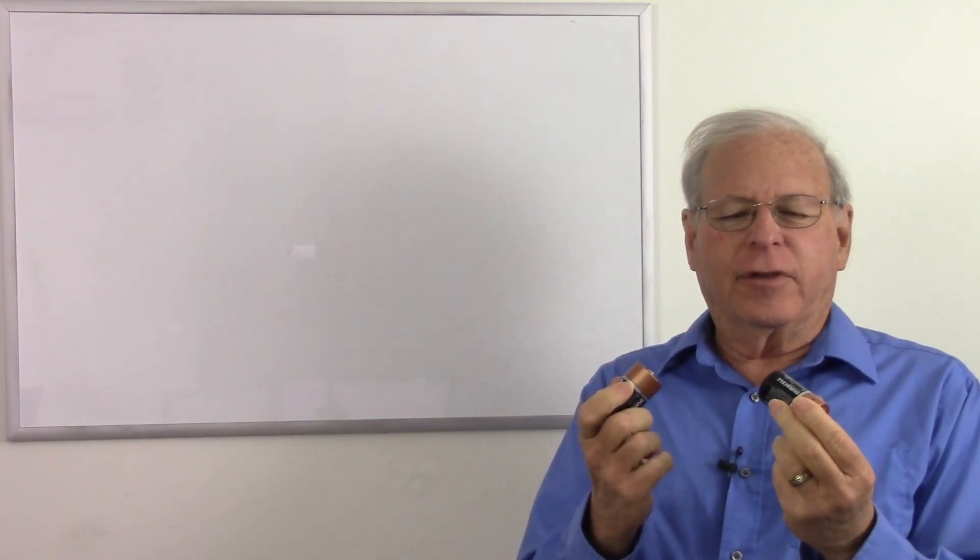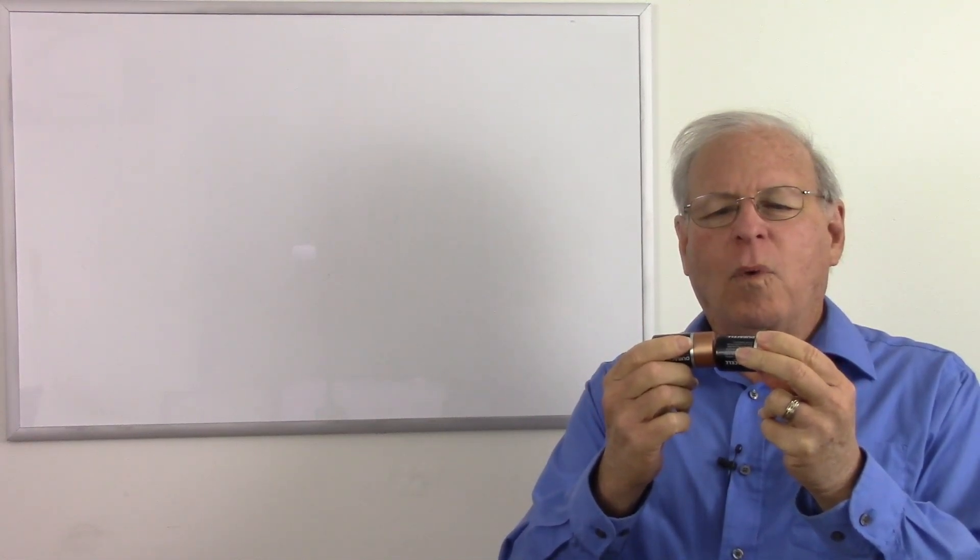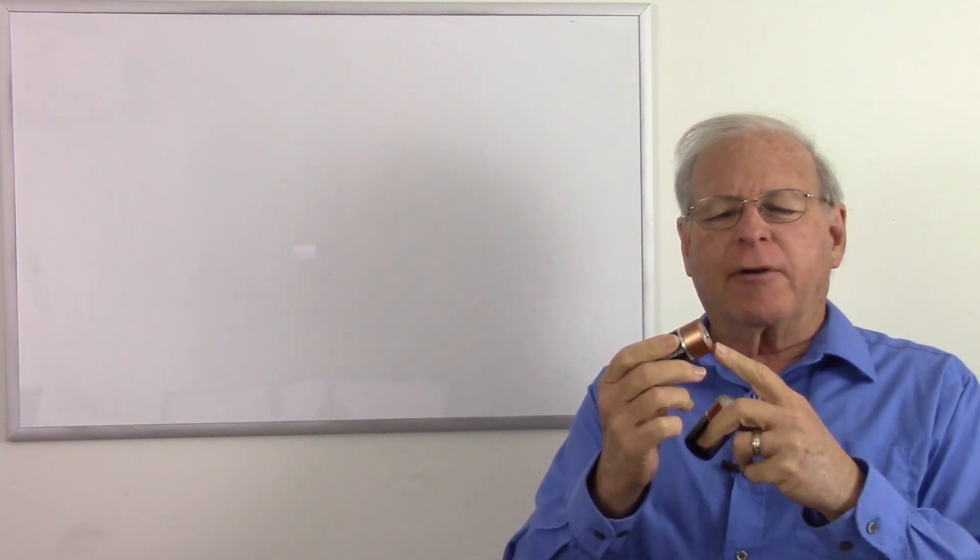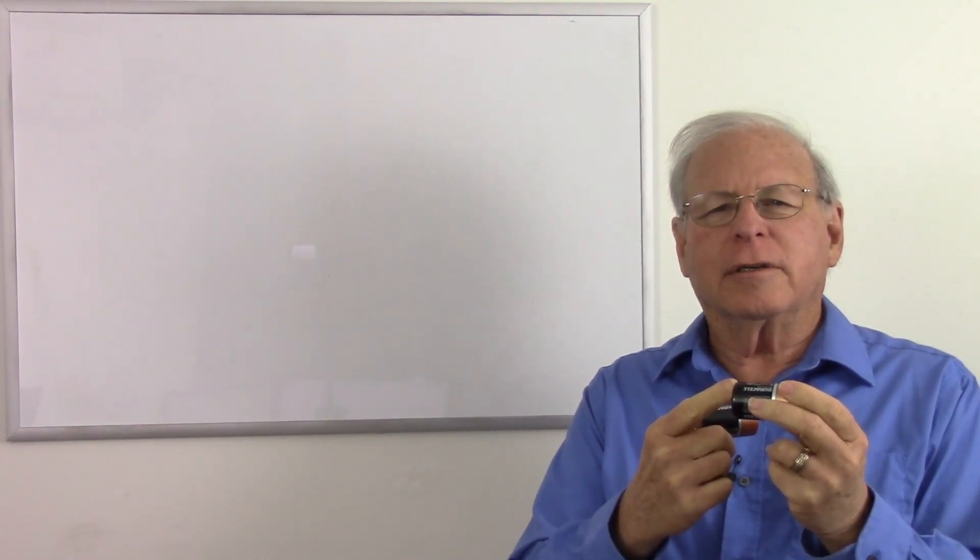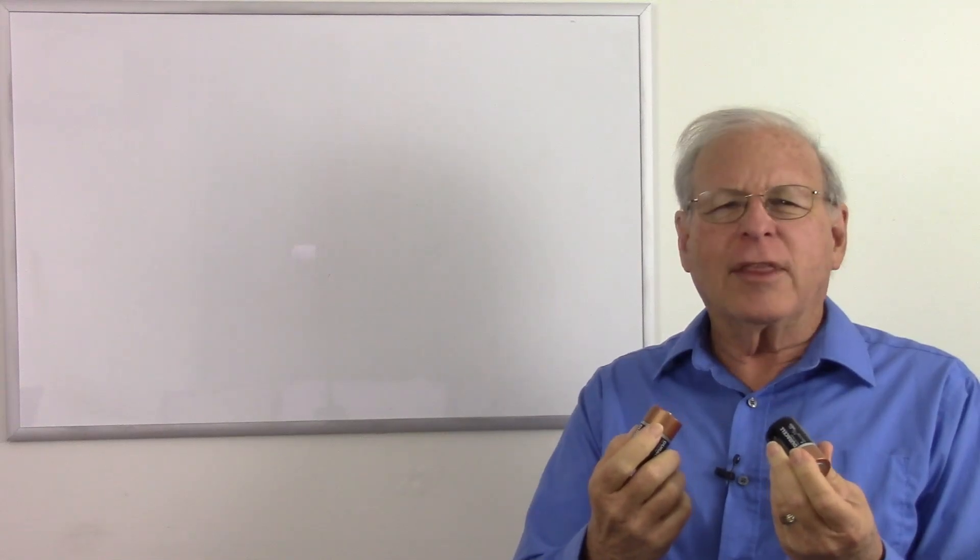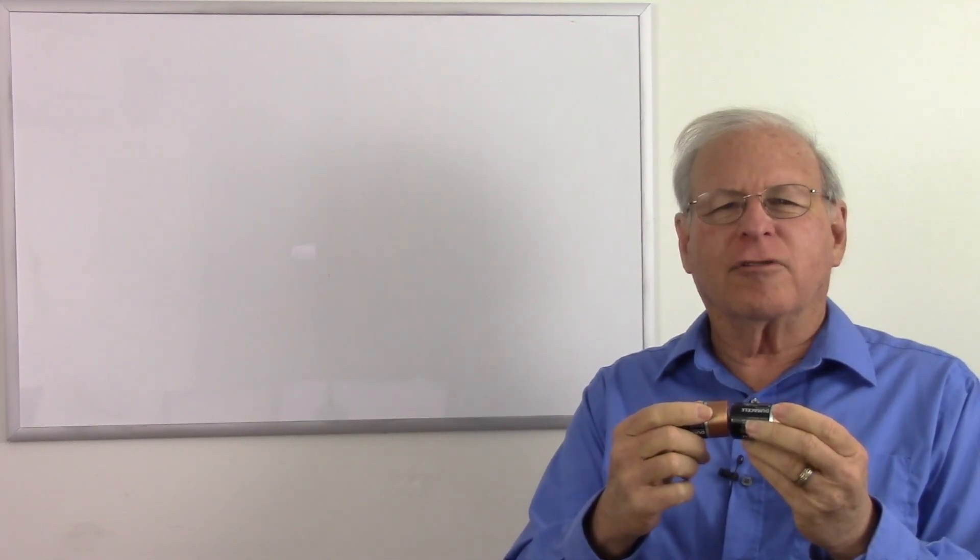if I take two batteries and touch them end to end, why doesn't the positive side of this battery suck the electrons out of this battery and discharge it? I never quite thought of it that way, but why doesn't that discharge the other battery?